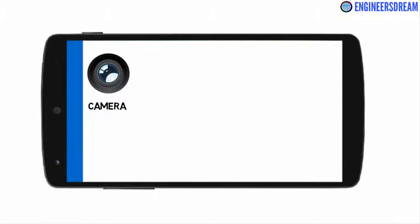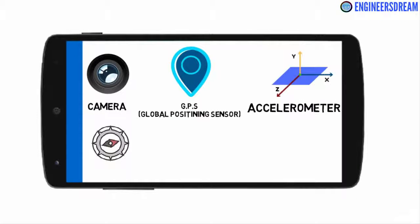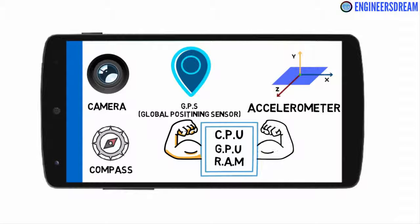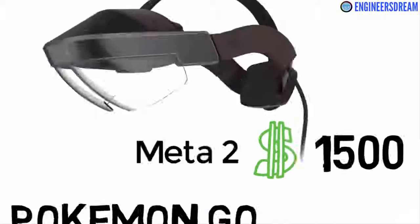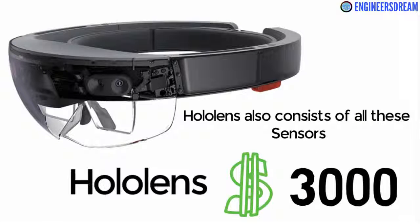For experiencing augmented reality inside your smartphone, your smartphone must contain a camera sensor, GPS sensor, accelerometer sensor, and compass sensor. On top of this, your smartphone should also have significant processing power — that is, it must have a good CPU, GPU, RAM, etc. The heads-up devices like HoloLens also consist of all these sensors.